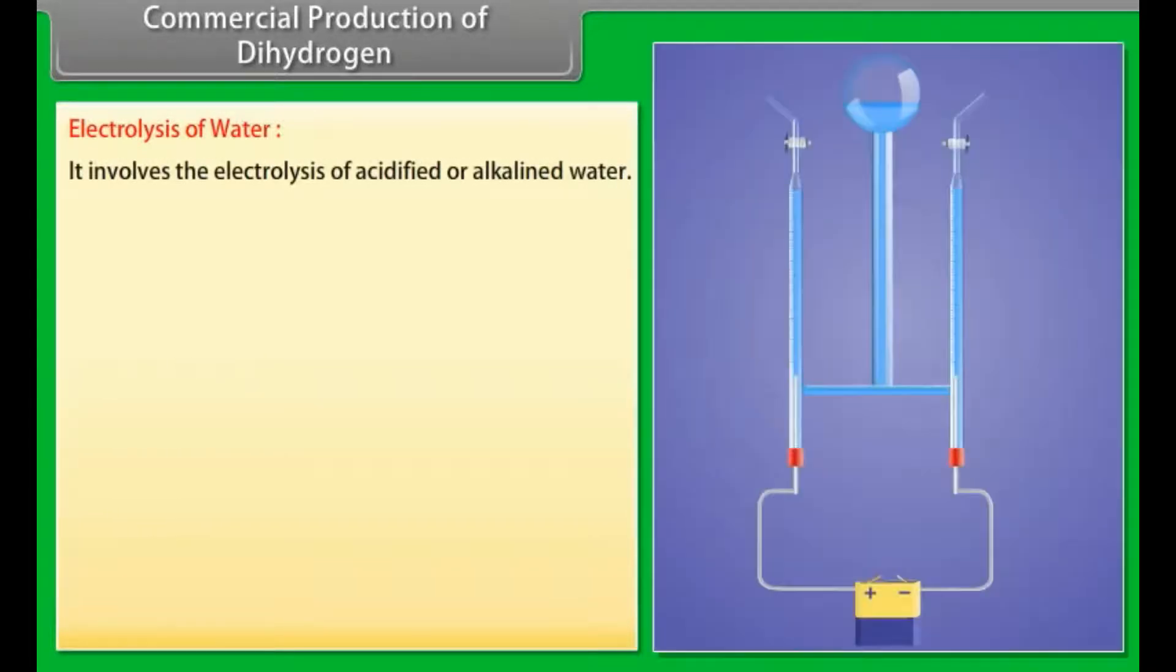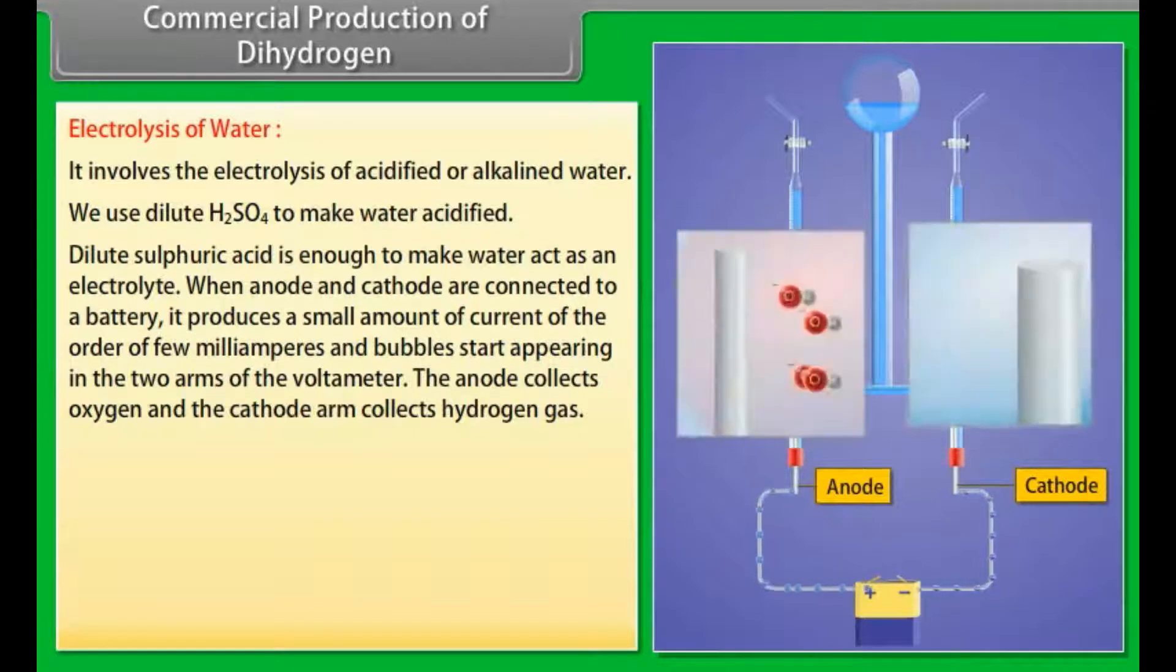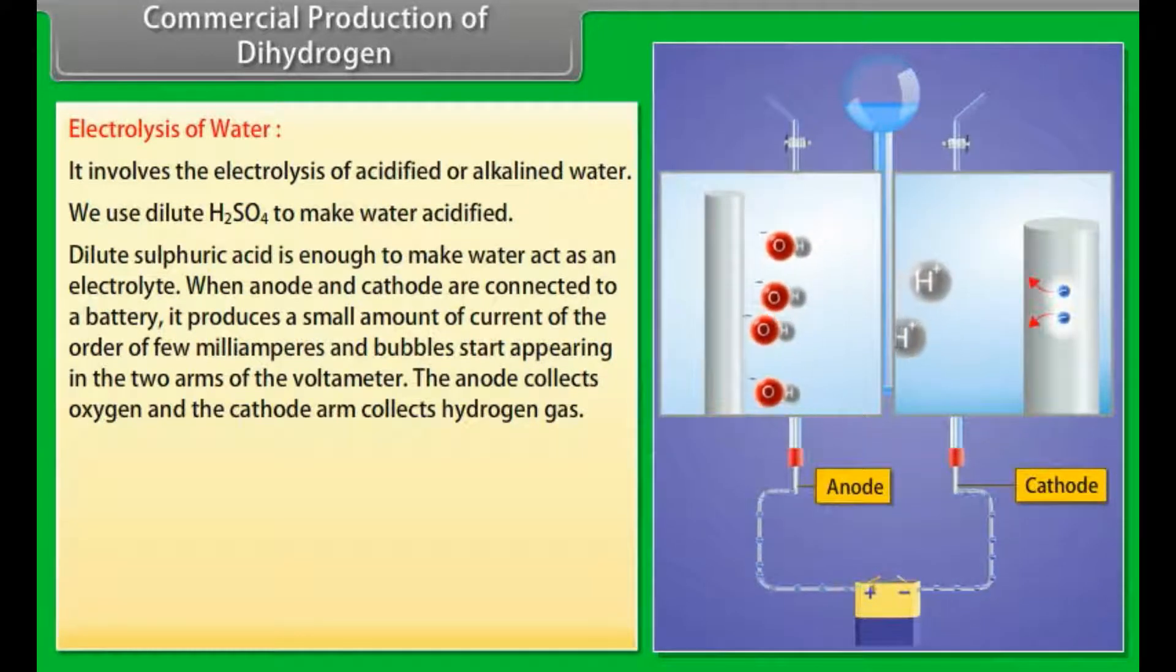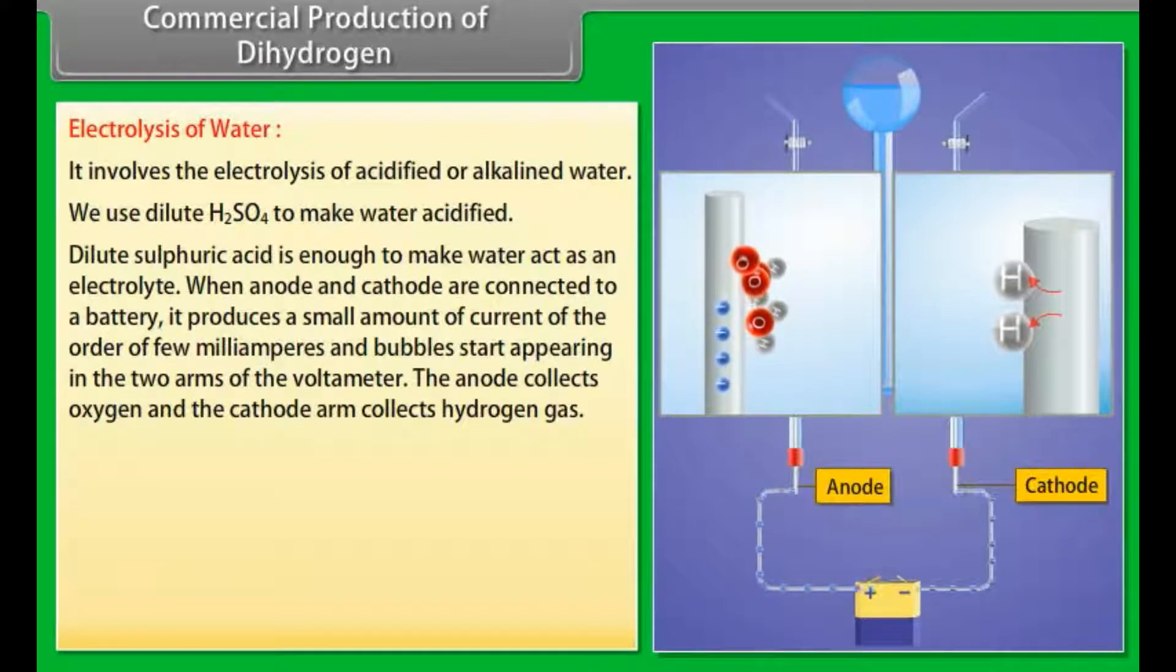Commercial production of dihydrogen. Electrolysis of water: It involves the electrolysis of acidified or alkalined water. We use dilute H2SO4 to make water acidified. Dilute sulphuric acid is enough to make water act as an electrolyte. When anode and cathode are connected to a battery, it produces a small amount of current of the order of few milliampere and bubbles start appearing in the two arms of the voltmeter.